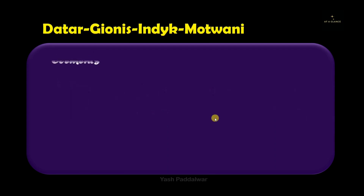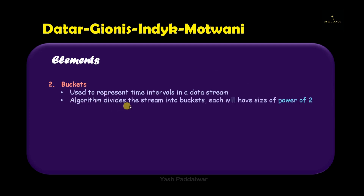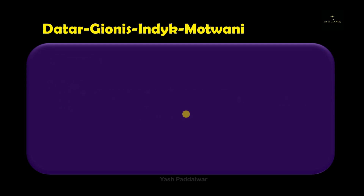The second element is buckets, which is the most important element in this algorithm. Buckets are used to represent time intervals in a given data stream — it creates specific sections from the data stream which are dynamically created in a continuous process. The algorithm divides the entire stream into buckets, and each bucket will have a size that is a power of 2. Buckets contain bits: zeros and ones.